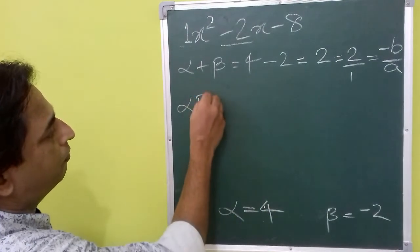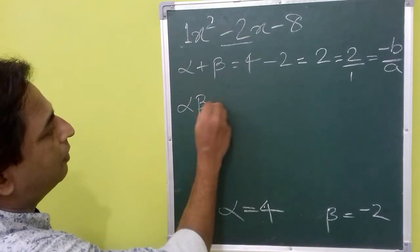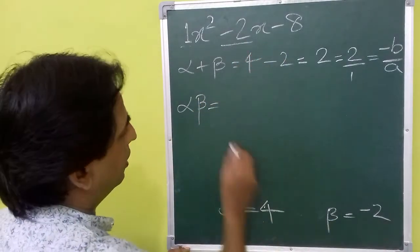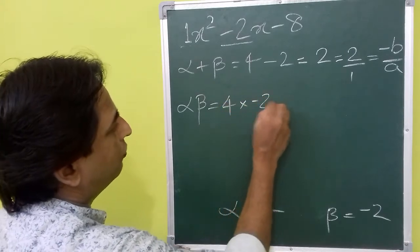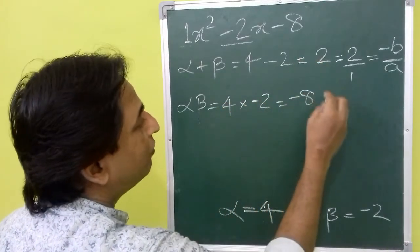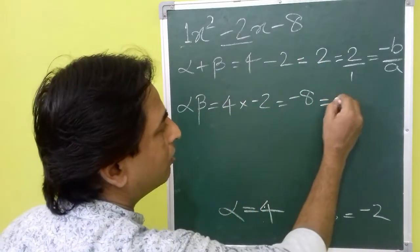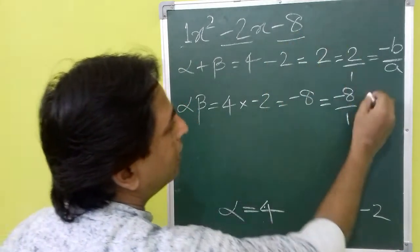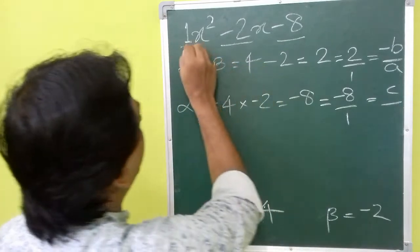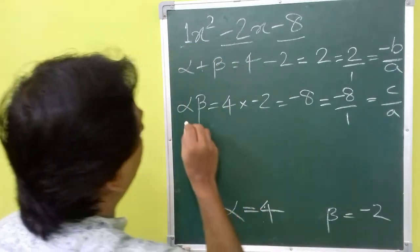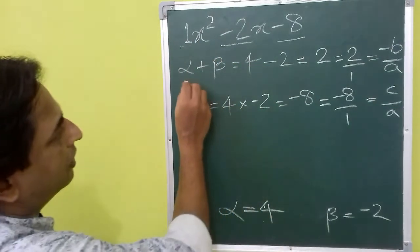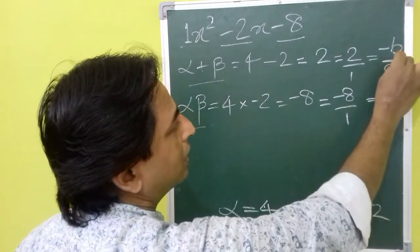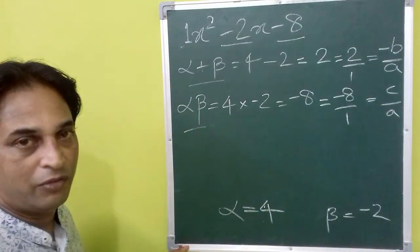Similarly we can verify the product. Alpha times beta is 4 times minus 2, which is minus 8. This can also be written as minus 8 by 1, which equals c by a. So we have verified the sum and the product equal minus b by a and c by a respectively.